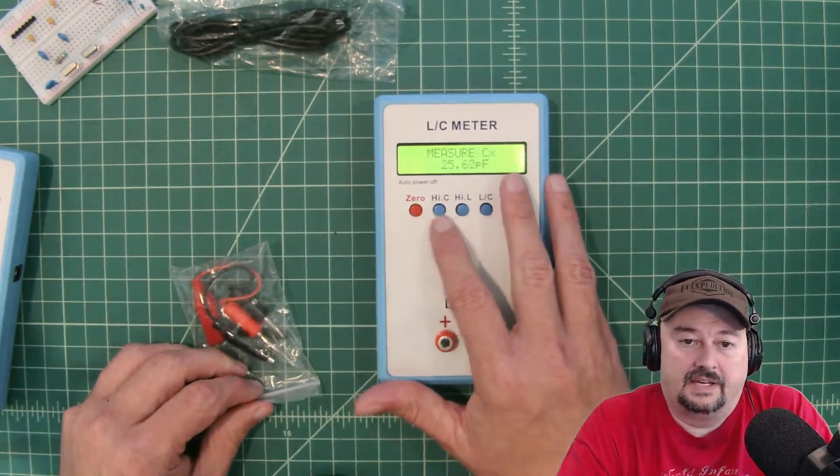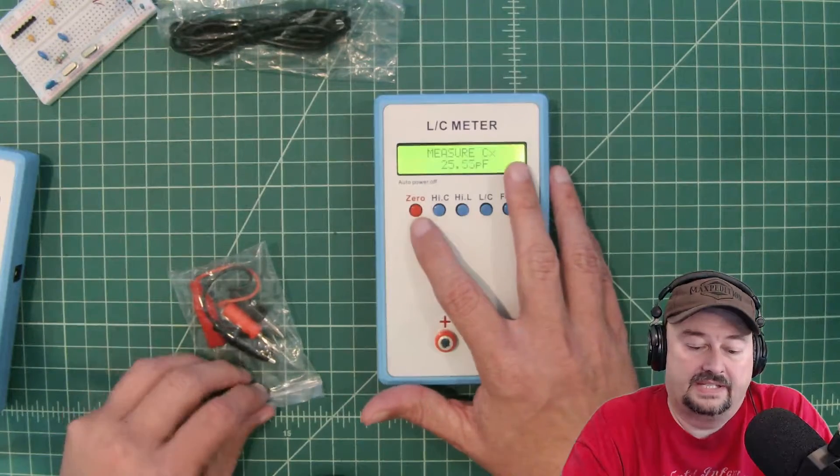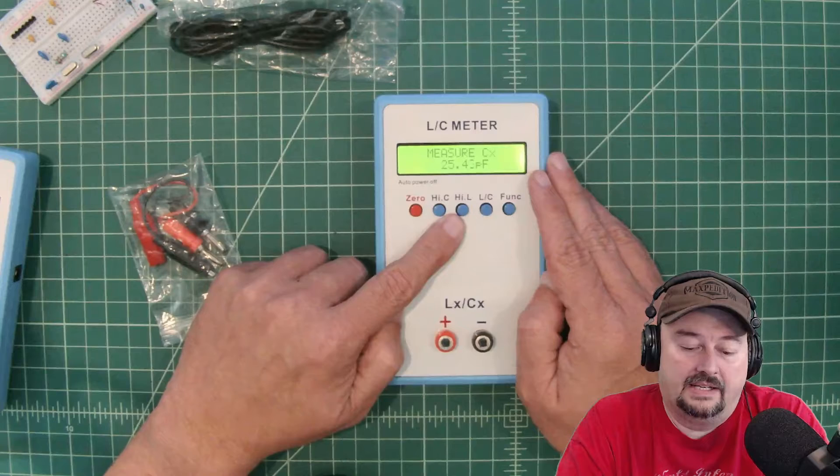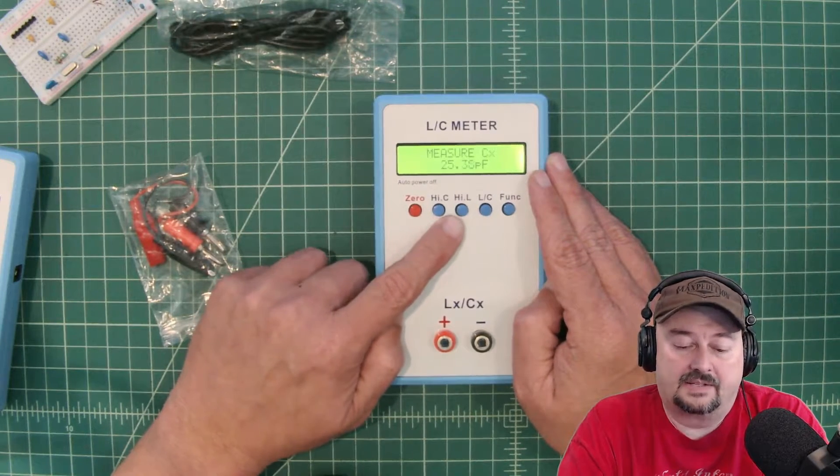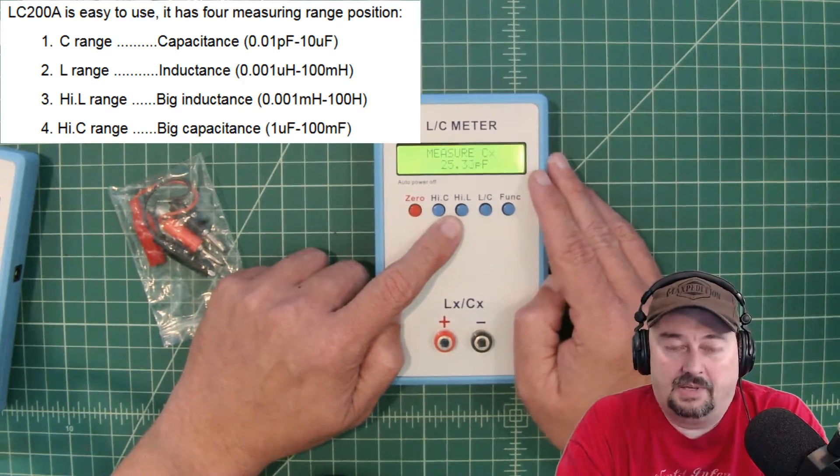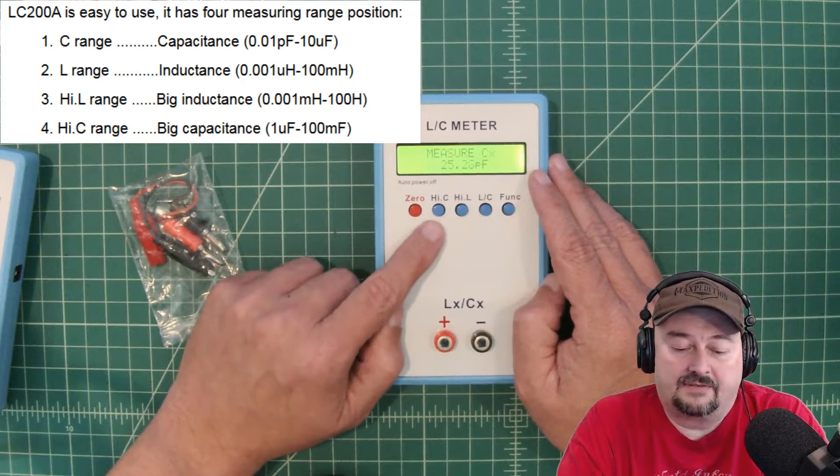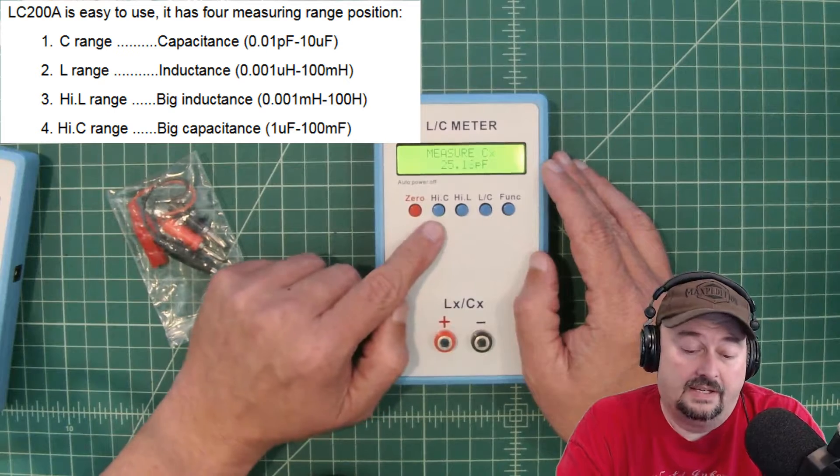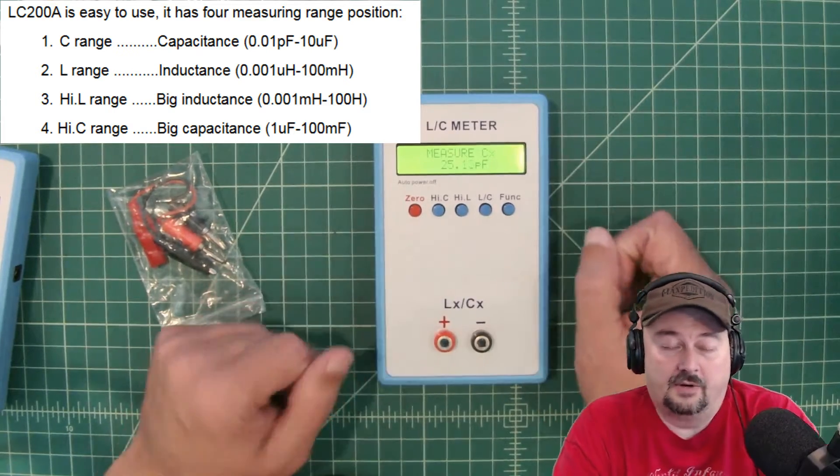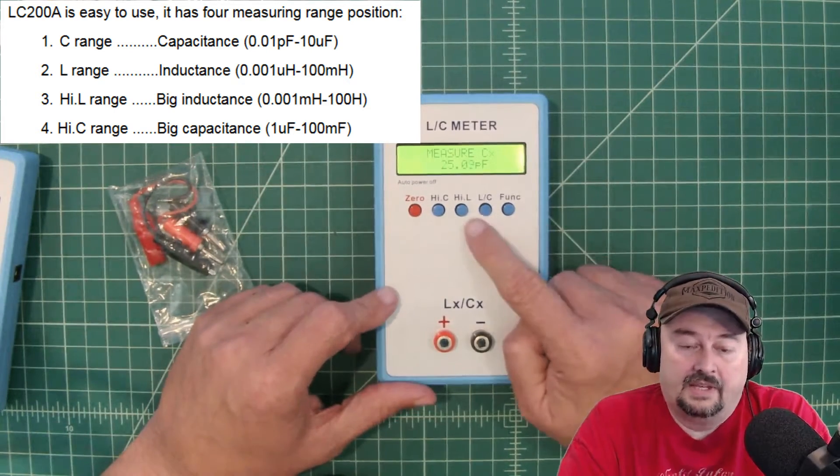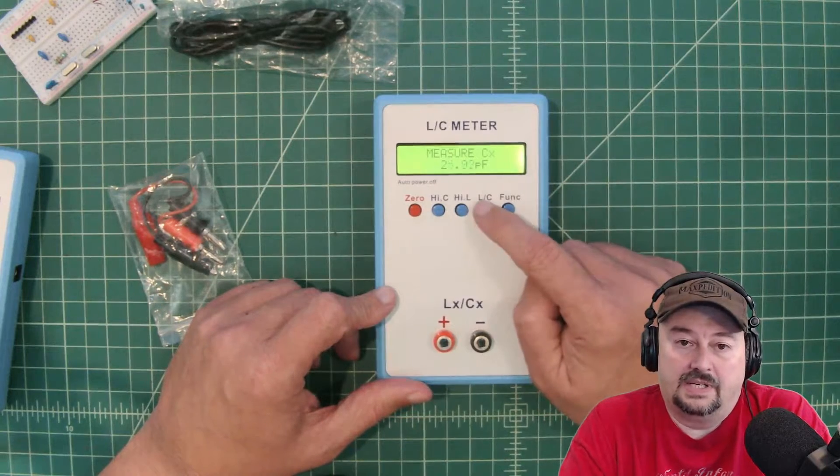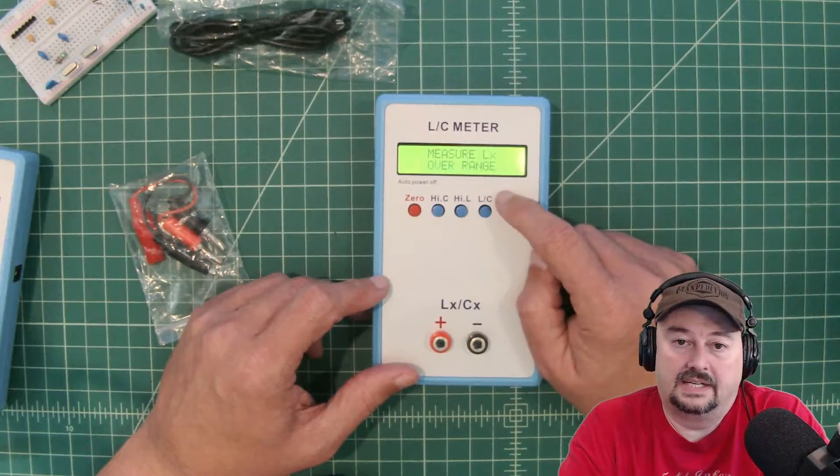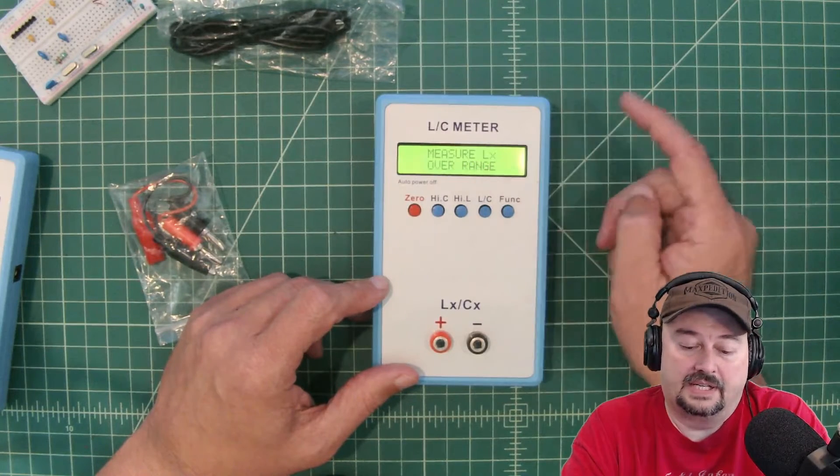Across the top, we have a couple of different buttons here. This is a zero button that we use for calibration. High C and high L are if we want to measure high capacitance or high inductance. Let me get a picture, and I'll roll that in right now. And you can see the different cutoffs that you would need to use if you were measuring components in that range. This allows you to toggle between capacitance and inductance. So here you can see measure capacitance with a C. And then I hit the button, and then it can now measure inductance.